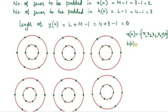The samples in h(n) are h1, h2, h3, padded with three zeros. Since the length of y(n) is 6, you draw 6 concentric circles like this.